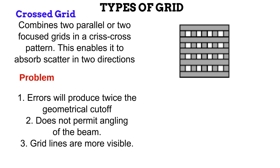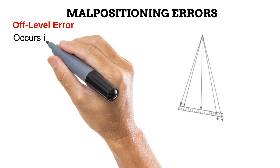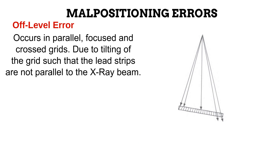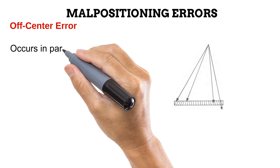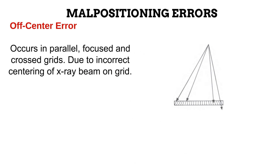When a grid is not properly placed, geometric cutoff can occur in different manners. These errors are known as malpositioning errors. The first is the off-level error, which occurs in all types of grids. Here, the grid is tilted such that the lead strips are no longer parallel to the X-ray beam. This causes the grid to absorb primary photons at the center and the side closer to the tube, allowing only photons at the far side to reach the image receptor — producing geometrical cutoff at the center and on one end. Next is the off-center error, which also occurs in all grids, when the beam is incorrectly centered, causing cutoff on one side of the image.